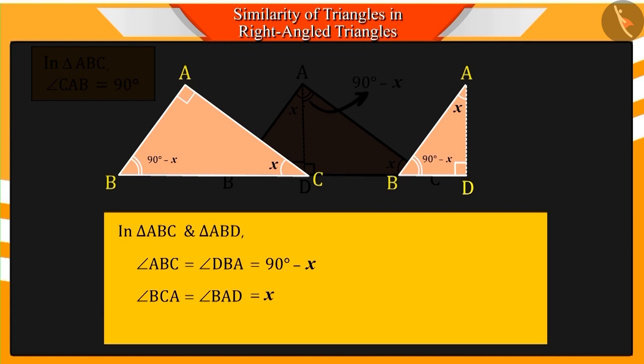Hence, based on AA criteria, triangle CAB and triangle ADB will be similar triangles.